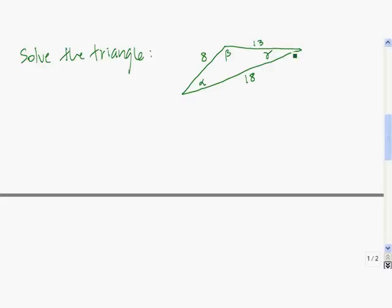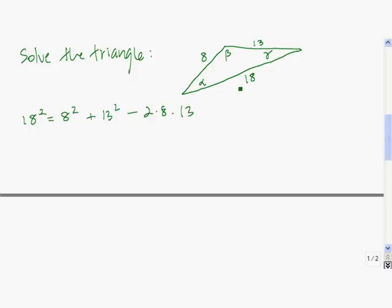Now here we have the side-side-side case. Let's solve this triangle. In the side-side-side case, the first angle we solve for is the biggest one, because then we know the other two will have to be acute angles. So let's solve for beta. We have 18 squared equals 8 squared plus 13 squared minus 2 times 8 times 13 times the cosine of beta.